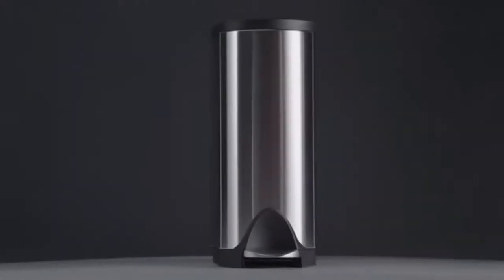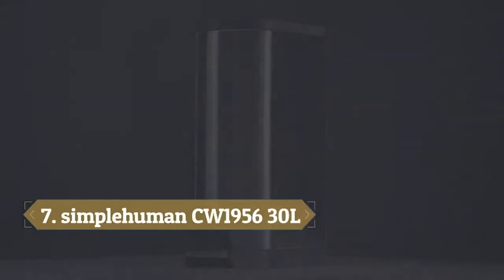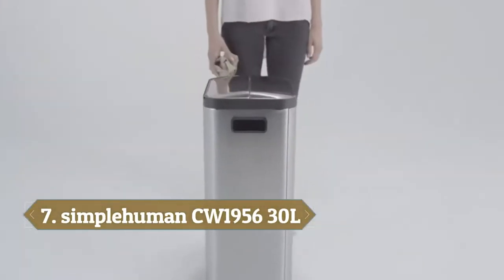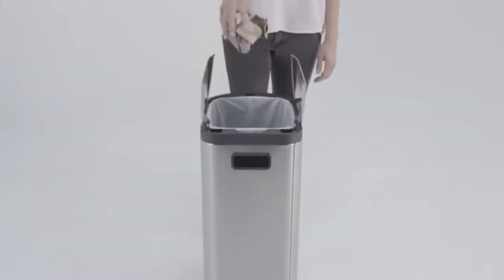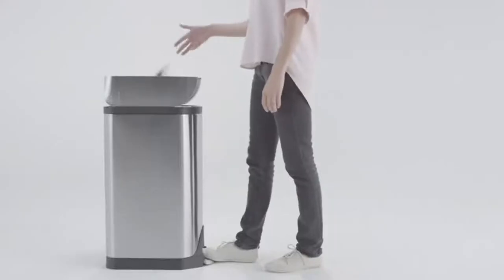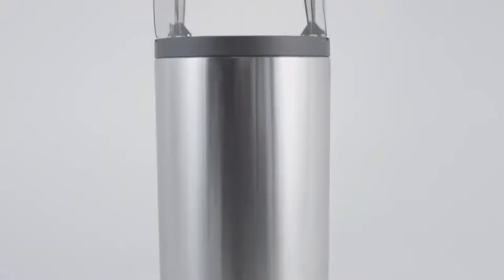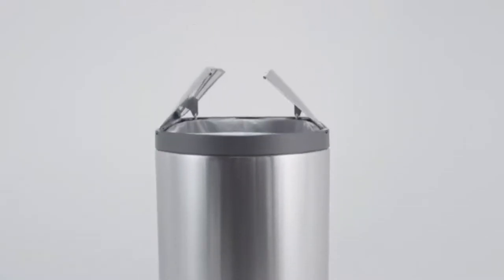This is the 30-liter butterfly step can. Right away, you notice something different. Its lid opens up from the center and fans out like the wings of a butterfly, hence the name. It has a low clearance, so you can place it under countertops or overhangs, and its slim shape means it will fit into tight spaces.